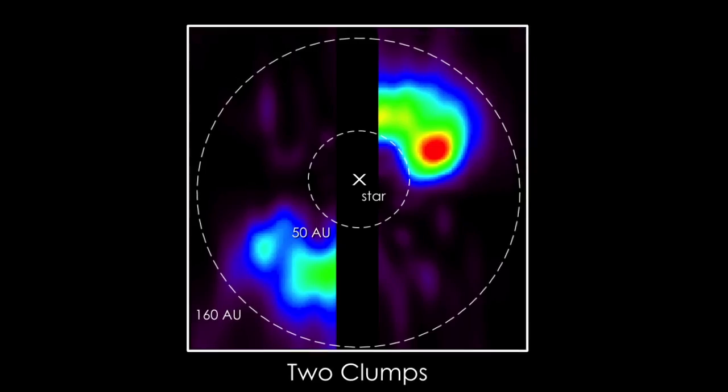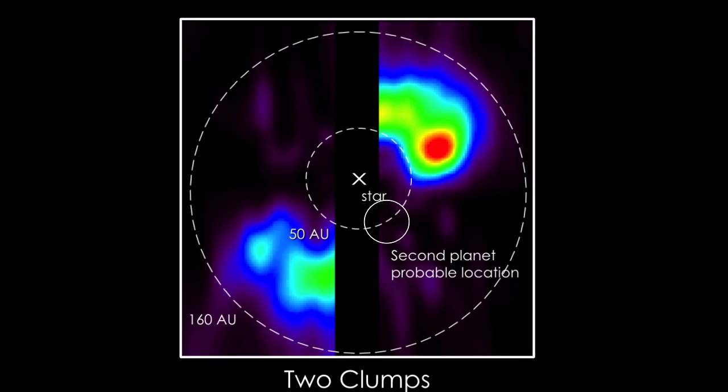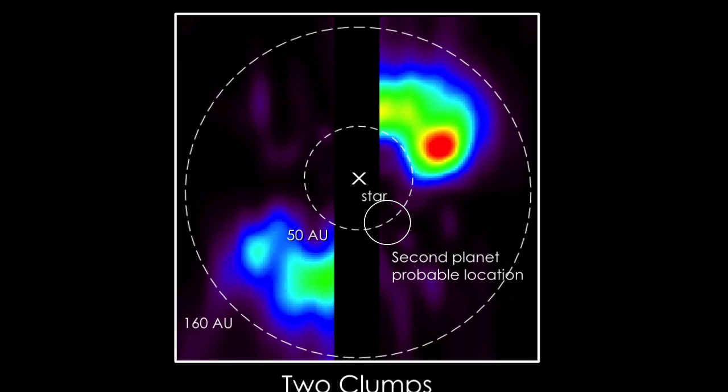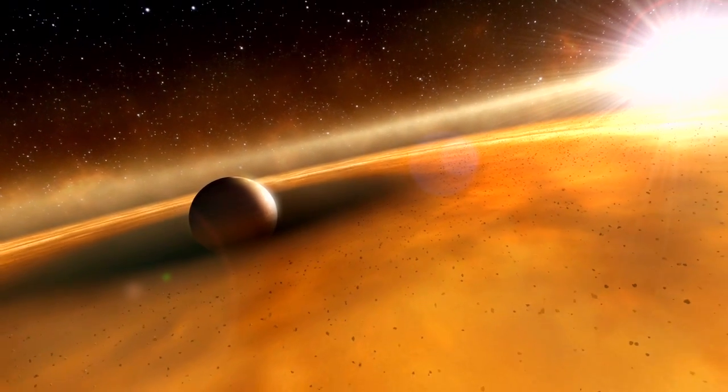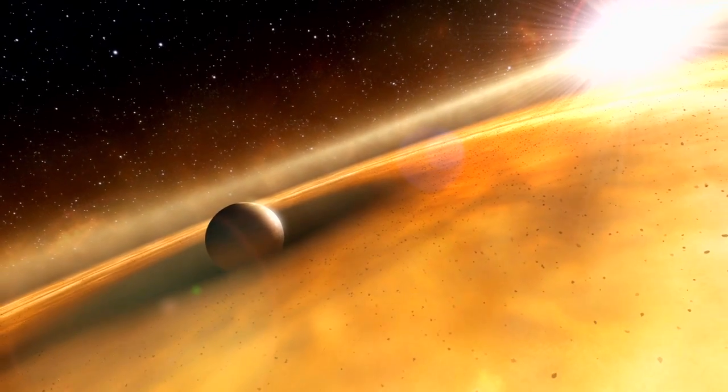We believe the comets are shepherded together by an as-yet undetected second planet, whose gravity confines the comets into a small region so they frequently collide. A planet with roughly Saturn's mass could do the job.